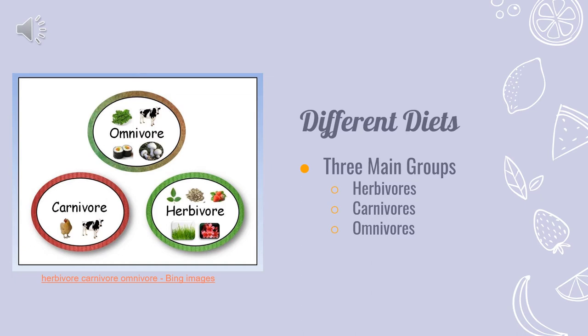Omnivores are animals that eat pretty much anything. An omnivorous diet is made up of both plant matter and meat. The meat portion is where the animals would get the majority of their protein.